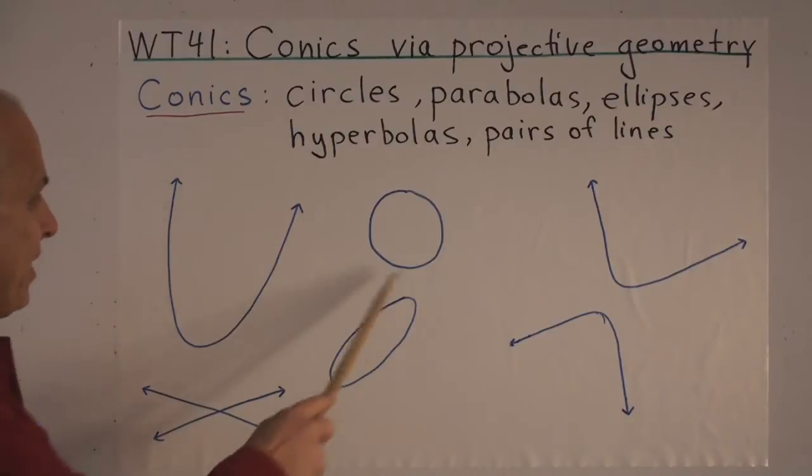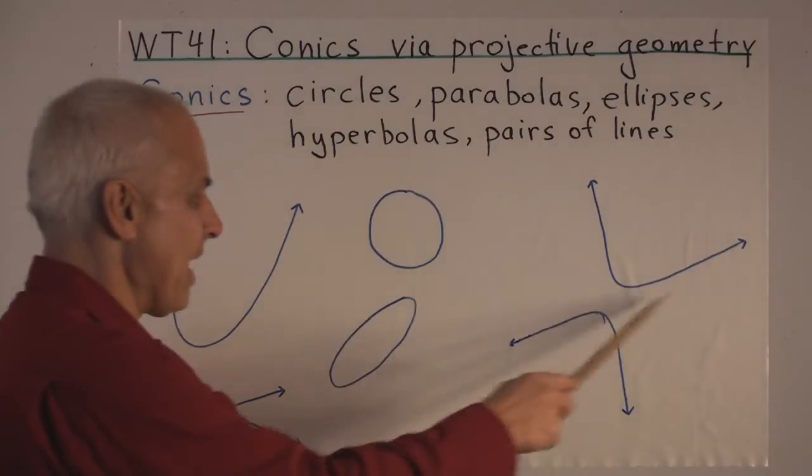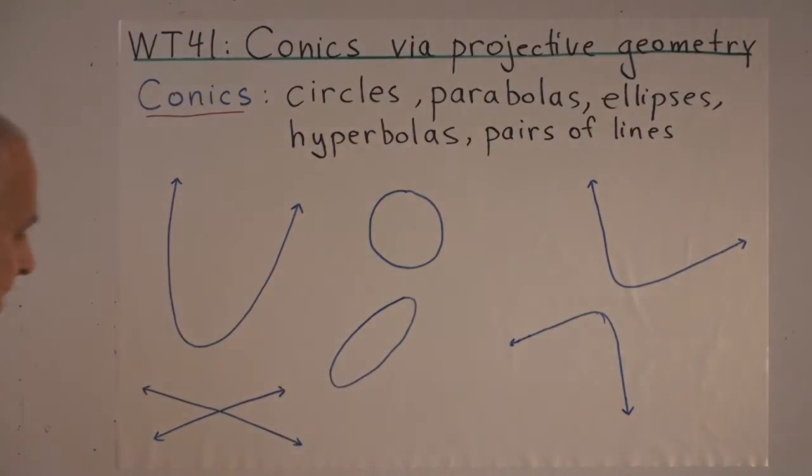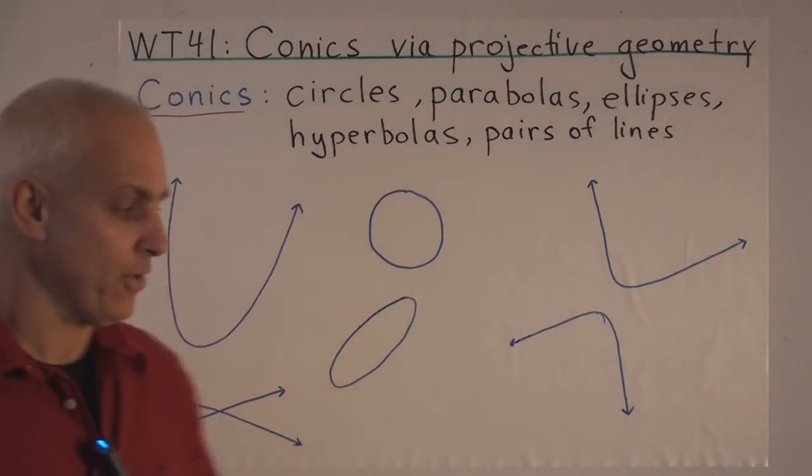There's a parabola, roughly, a circle and ellipse, a hyperbola which has two branches, and a pair of lines is some kind of degenerate conic which is often included also.